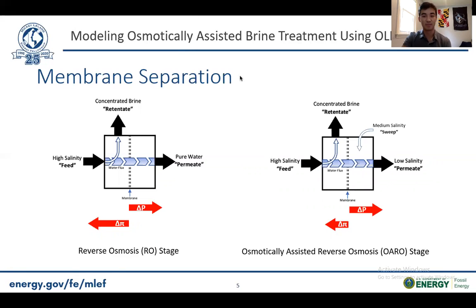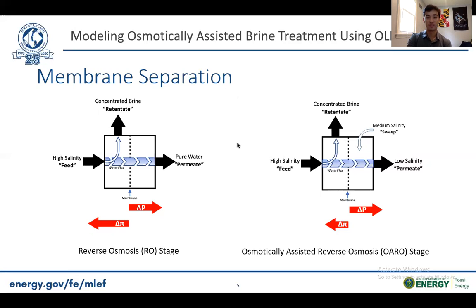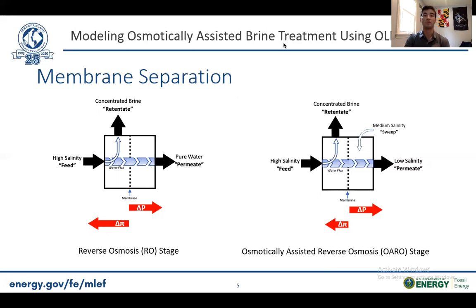Currently, these high-salinity brines are treated using evaporative processes, but RO processes are significantly more efficient because they avoid the energy-intensive phase change associated with distillation. This is where my topic of research comes in: osmotically-assisted reverse osmosis, or OARO. My mentor, Dr. Nicholas Siefert, worked with Timothy Bartholomew to develop and optimize this modified RO process. At its core, it's very similar to conventional RO, but there's a saline sweep solution on the permeate side of the membrane that lowers Δπ, which allows current membranes to separate high-salinity brines. In effect, OARO is assisted by osmotic pressure relative to RO, hence its name.